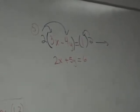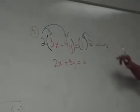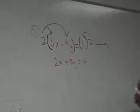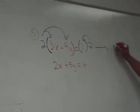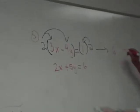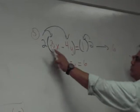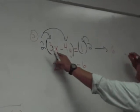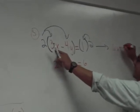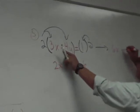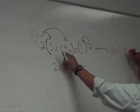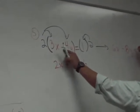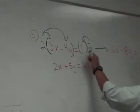We'll see that in just a second. Let's see what equation we get. 2 times 3x is 6x. Minus 8y. Equals 2.